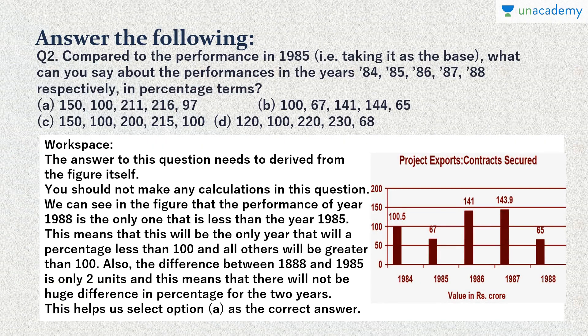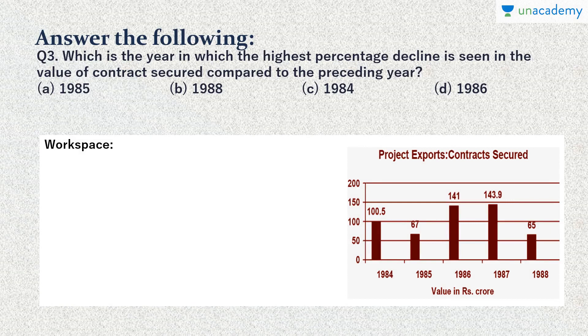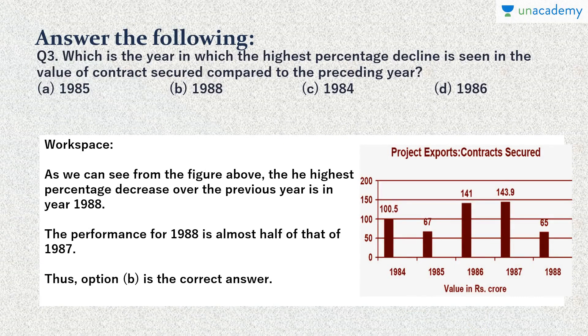Question 3: Which is the year in which the highest percentage decline is seen in the value of contract secured compared to the preceding year? We should check only with the preceding year, so we should check 1985 with 1984, 1986 with 1985, and so on. We should find out which was the highest percentage decline. If we can see from the figure, the highest percentage decrease was in the year 1988, since it declined from 143.9 to 65. So our correct option is 1988, option B.